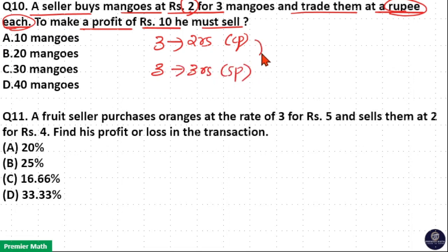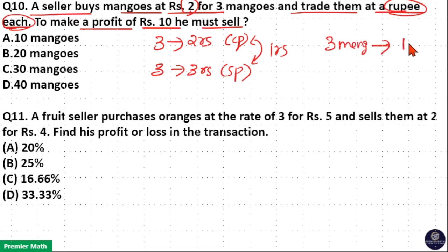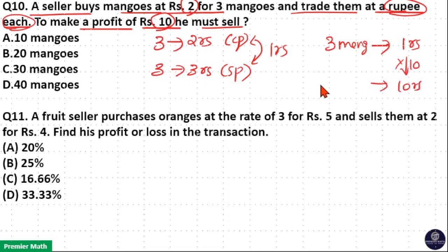This is the sell price. The difference between CP and SP is 1 rupee. So out of 3 mangoes, he gets 1 rupee profit. To make 10 rupees profit, he should sell 3 into 10, which is 30 mangoes.